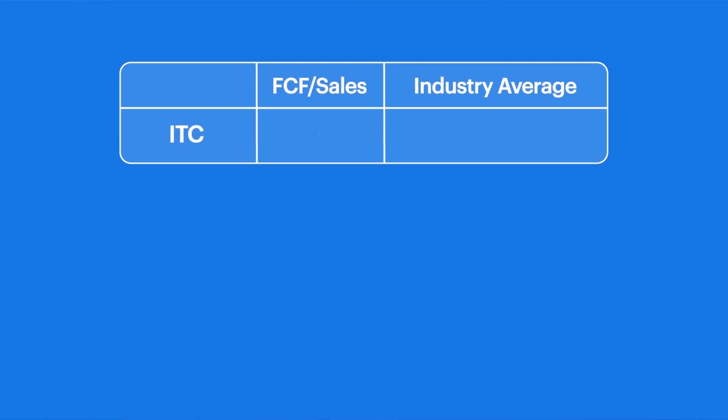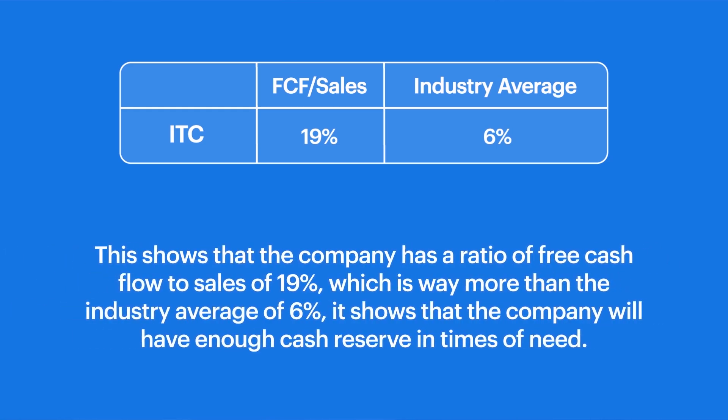That's why if you look at this ratio over time, you will get a better picture of whether the company is maintaining this ratio over the years. For example, the free cash flow to sales ratio for ITC is around 20% versus the industry average which is around 6%. Just looking at this ratio, we can conclude that ITC is better positioned to convert its sales into free cash flows compared to its industry competitors. That's why its free cash flow to sales ratio is higher than its industry average.